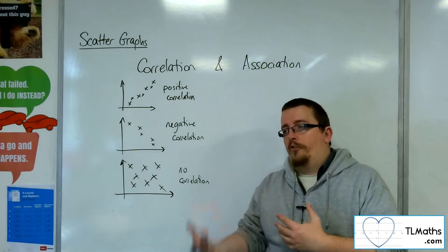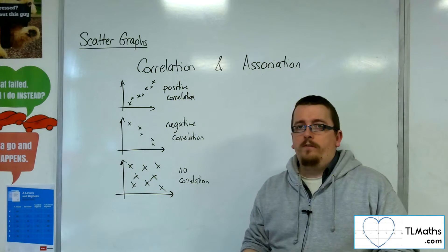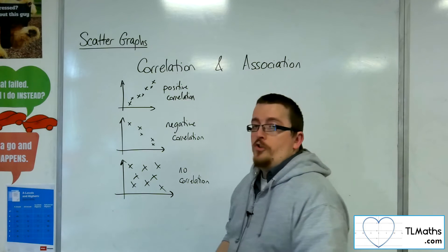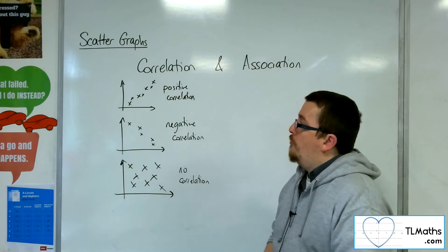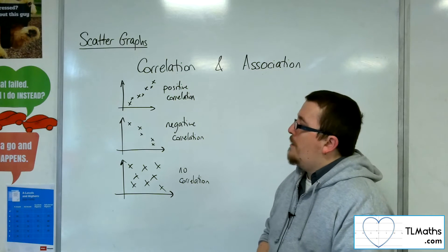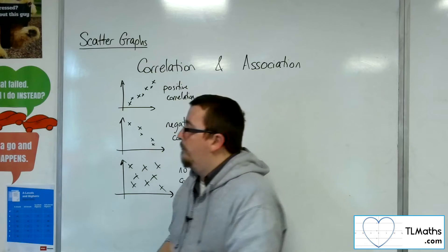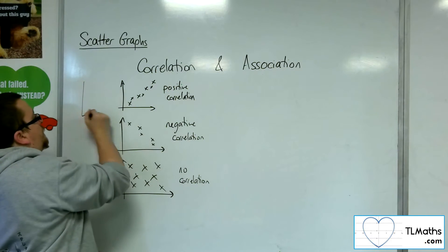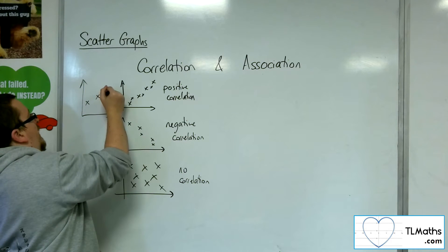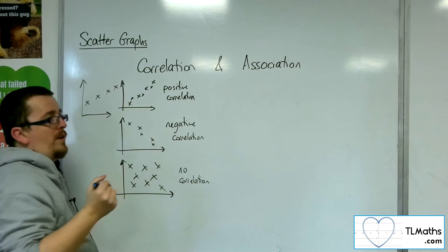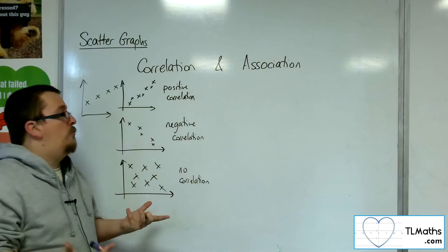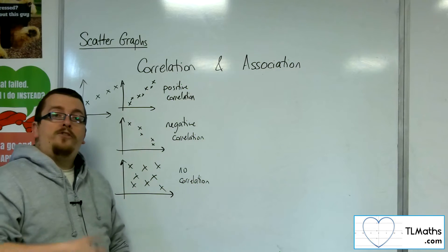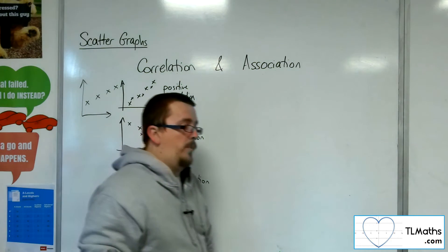Now, you should also be aware of the strength of the correlation. So the closer the data points are to a straight line, the better and stronger the correlation. So you can have very strong positive correlation, which would almost be in a straight line. Data that appears in a perfect straight line has perfect positive correlation going from bottom left to top right, whereas this might just have strong or weak positive correlation.